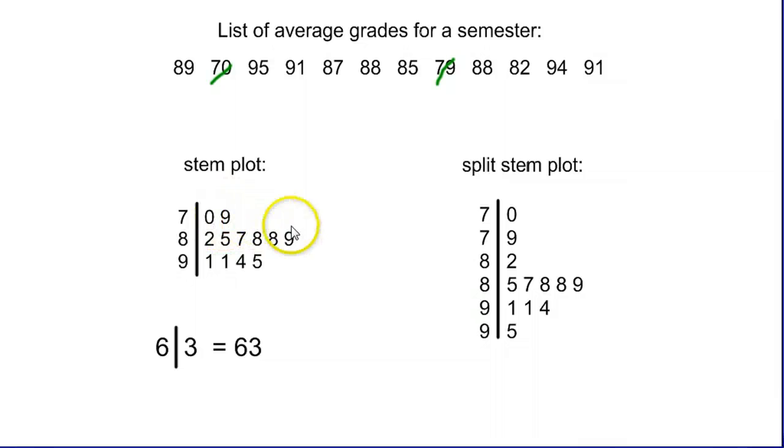We can keep going, and what it shows us is, whereas here it looks like it's fairly symmetrical around the 80s, we can see that actually we have a lot of our data in the high 80s and in the 90s, and we have very little in the low 80s and 70s. So as this graph looked like it was pretty much symmetrical, here we can actually see a lot more of a skew. And so whenever your data gets too bunched up in a stem plot, splitting the stem can give you a little bit more information.